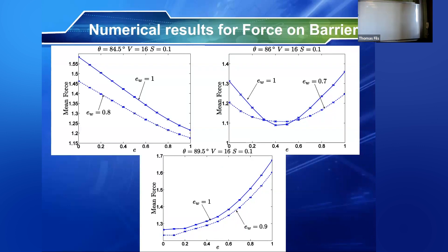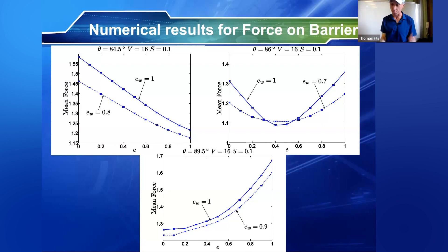Something else happens when you change the coefficient of restitution. Normally, as you increase E — making particles more elastic — you decrease the mean force. But if you take the angle very close to 90 degrees with a focused jet, you can actually make the force increase with E. And there's a small range where part of the behavior increases and part decreases. This is very surprising. What's going on?